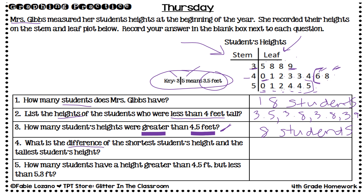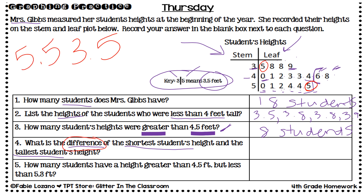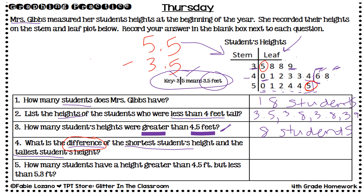Question four: what is the difference between the shortest and tallest student's height? With a stem and leaf plot this is easy because the data is in least-to-greatest order. The shortest student is three and five tenths feet and the tallest is five and five tenths feet. Subtract three and five tenths from five and five tenths to find the difference.